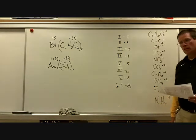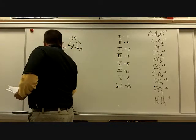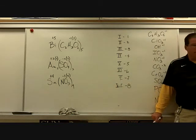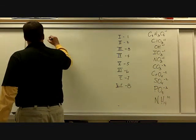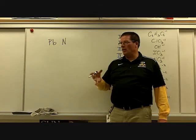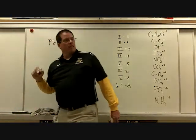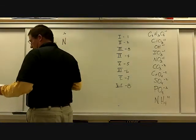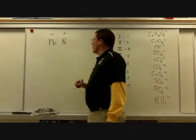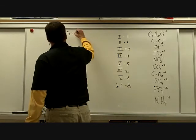Tin(IV) nitrate — Sn with a plus-4 charge; nitrate is NO₃ with negative-1. Now lead nitride — lead(II) and nitride. Nitrogen is in group 5A, so nitride has a negative-3 charge. Lead has a charge of plus-2 here — it could be 4, but we use 2 since the Roman numeral says II. We need 2 leads and 3 nitrogens. How many parentheses? Zero — good, don't add them.